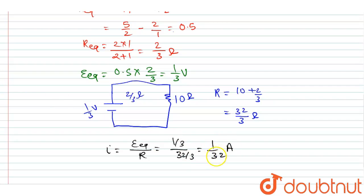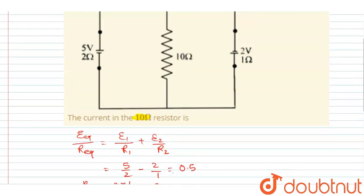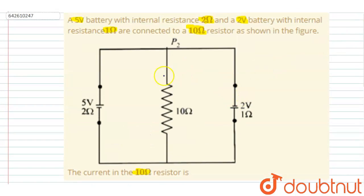So the current through the 10Ω resistor will be 1/32 ampere. If we see the question again, we wanted the current through this 10Ω, and the current through 10Ω is 1/32 ampere. Simple. Thank you.